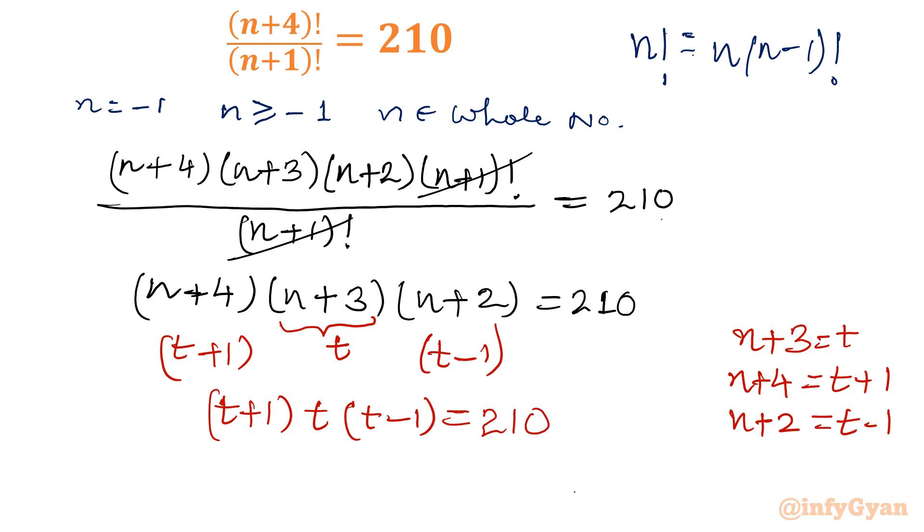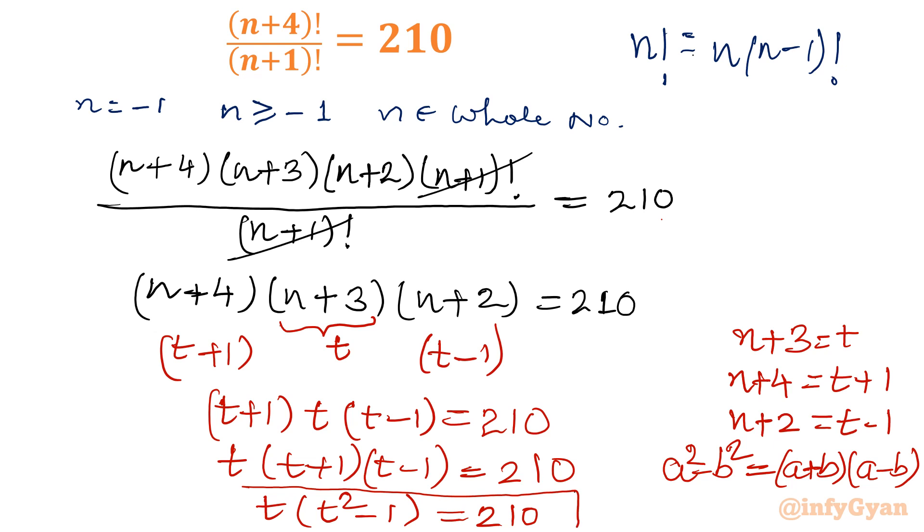So if I will club first and last, I can write t times (t+1)(t-1). Difference of squares: a+b times a-b equals a²-b². So I can write t²-1 equal to 210 by the algebraic identity. Our ultimate equation becomes t times (t²-1) equal to 210.